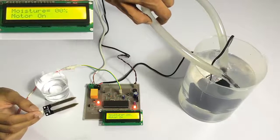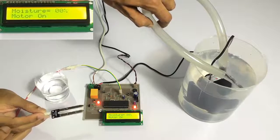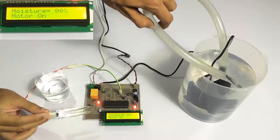As the moisture content or the water content of the soil is zero, it has switched on the pump to start the irrigation.